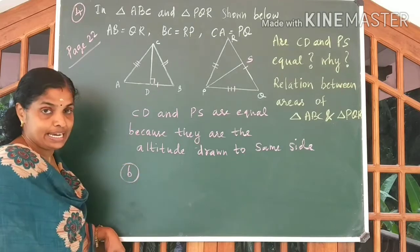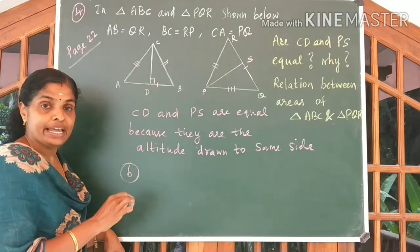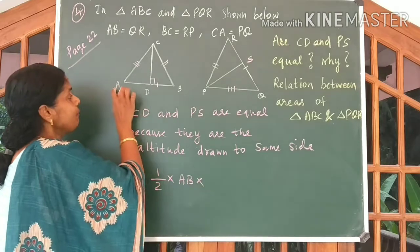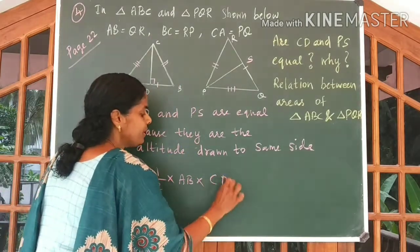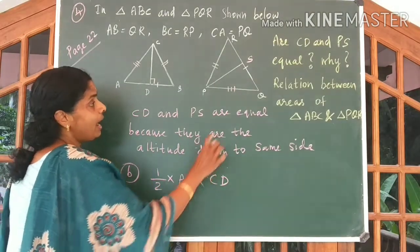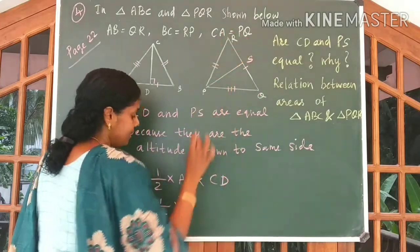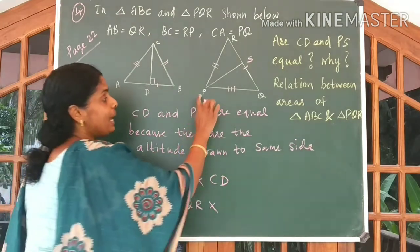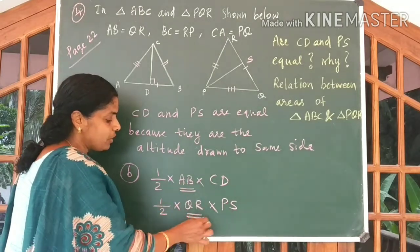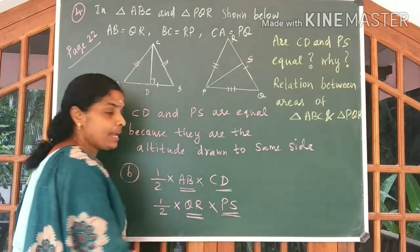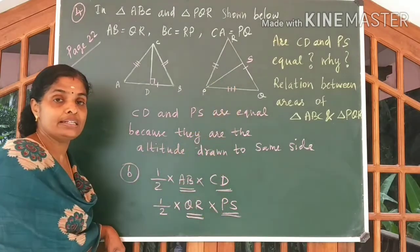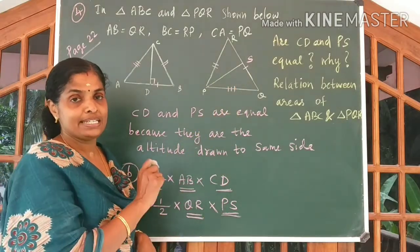In the second triangle, we will write half into base into height. The base is AB, so area equals half × AB × CD. The area of the second triangle equals half × QR, where QR is the base and PS is the altitude. Now, what do you know about AB and QR? They are equal. What about CD and PS? They are also equal. So what can you say about the areas of these two triangles? The areas are also equal.